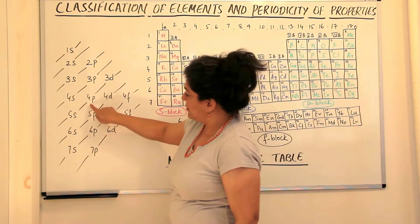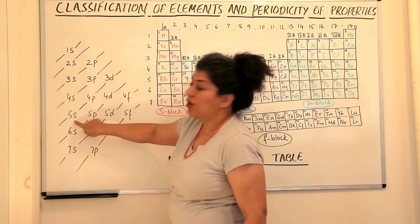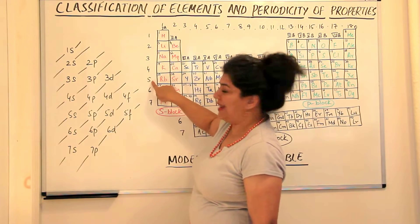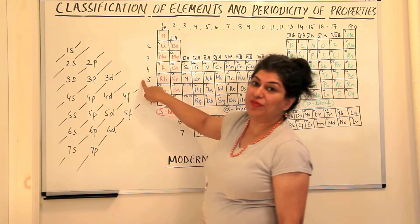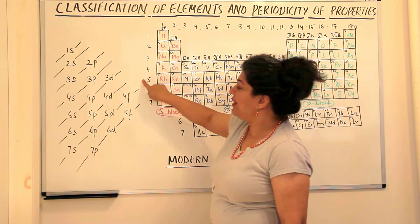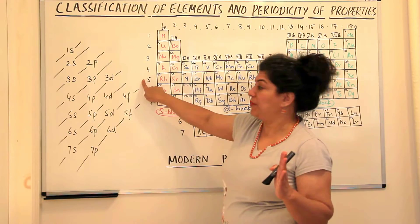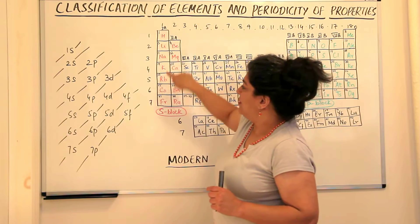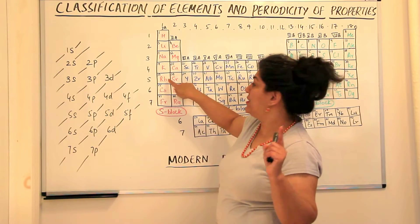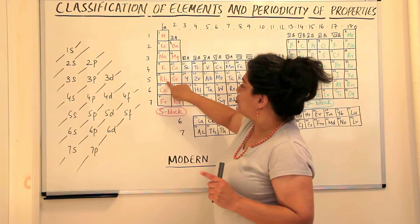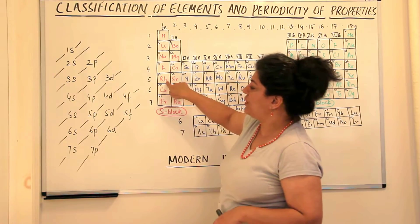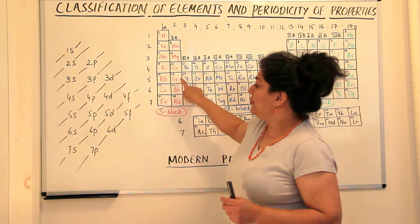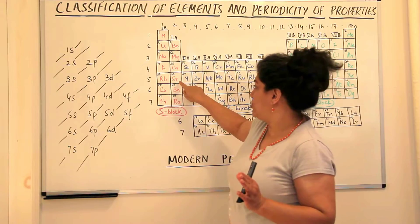After the 4p orbital is filled up, the next electron goes to the 5s orbital. So it would belong to the fifth period because the period is the principal quantum number. So the fifth period, s orbital, would be here. That one electron in the s orbital is the first group, so it would be rubidium. Rubidium would have one electron in the 5s orbital and strontium would have two electrons in the 5s orbital.